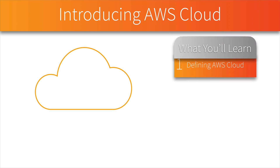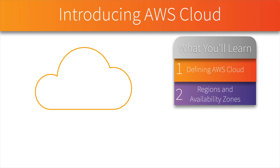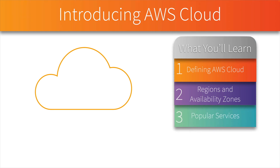Specifically, we'll begin with a definition of AWS Cloud and talk about how it stacks up against the competition. We'll talk about how it is available worldwide, and that worldwide infrastructure is divided into regions and availability zones. We'll define those and explain their benefits. At the time of this recording, AWS Cloud has over 200 services available, and in this video we'll introduce you to a few of the more popular services.